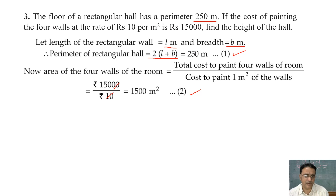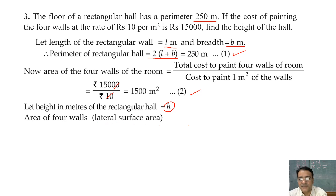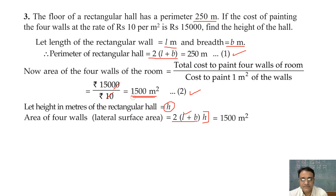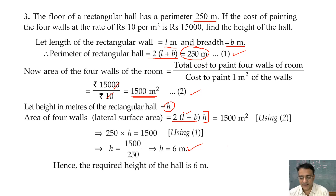Area of four walls = perimeter of base × height. Using equation 1, perimeter = 250, and from equation 2, area = 1,500 m². So 250 × H = 1,500, giving H = 1,500 ÷ 250 = 6 m. Hence the height of the hall is 6 m.